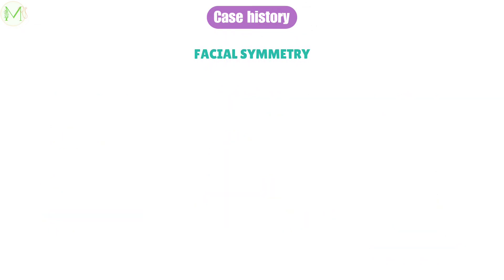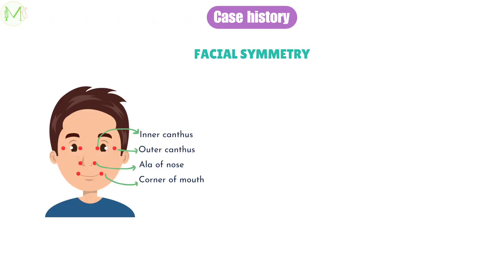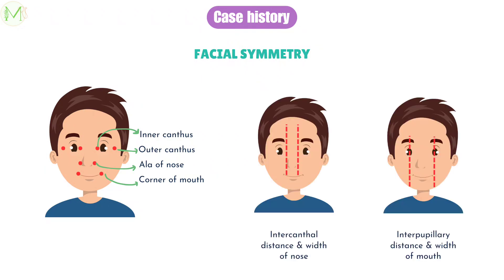We have various ways to assess facial asymmetry, starting with four major points: inner canthus, outer canthus, ala of the nose and corner of the mouth. By comparing these four points bilaterally, we can appreciate facial asymmetry. Also, intercanthal distance equals the width of the nose, and interpupillary distance equals the width of the mouth. With the help of these, we can identify asymmetry in the frontal plane.